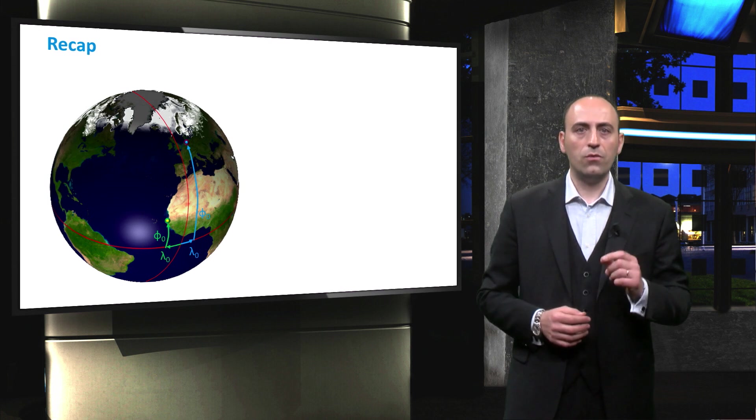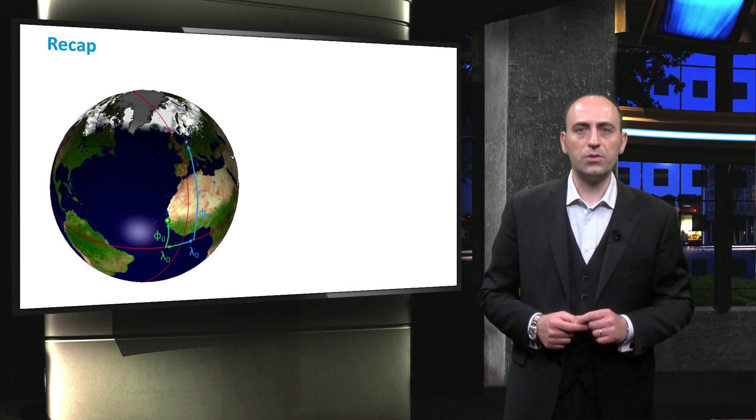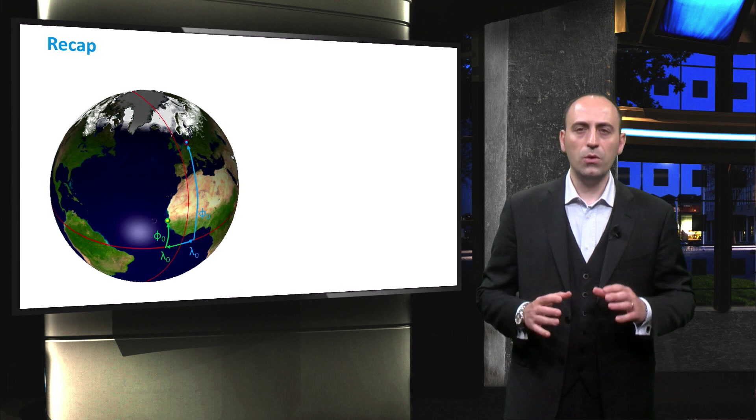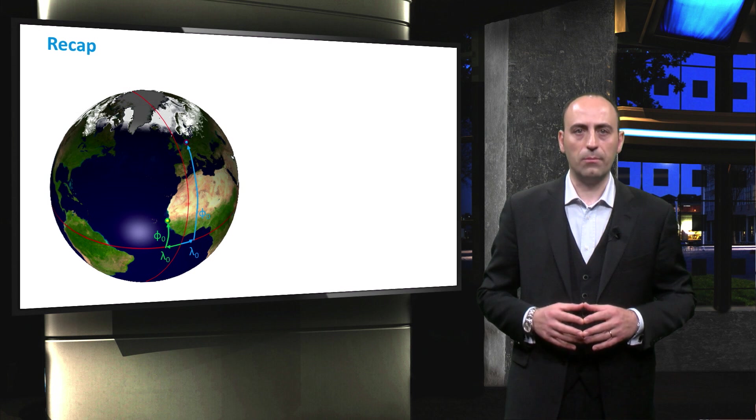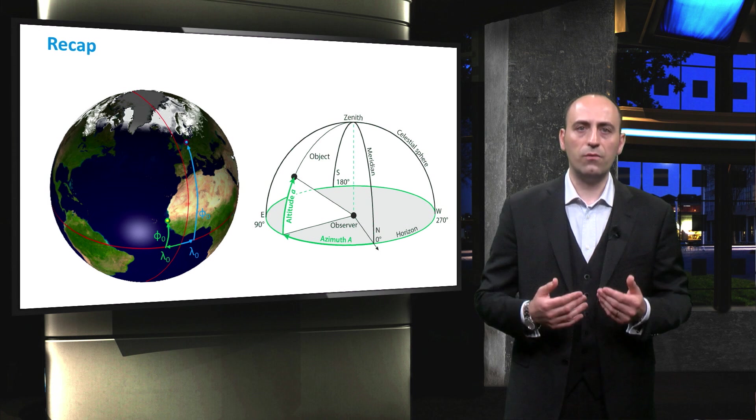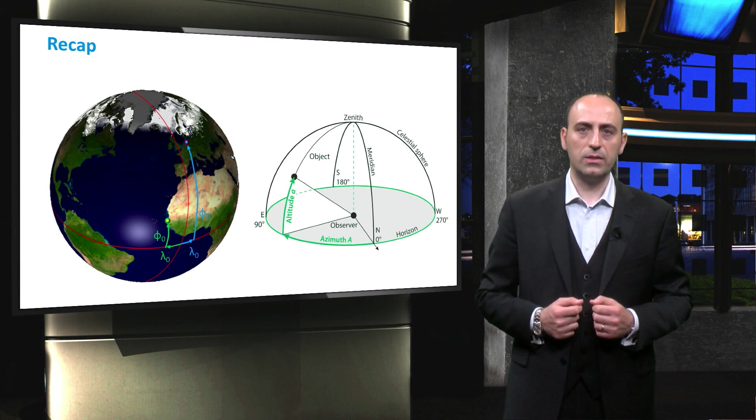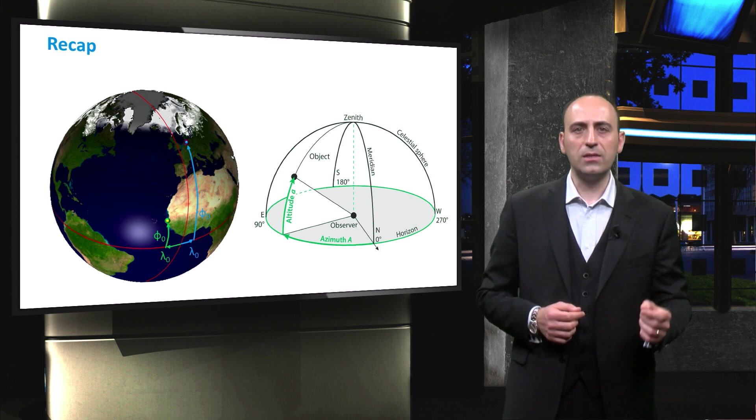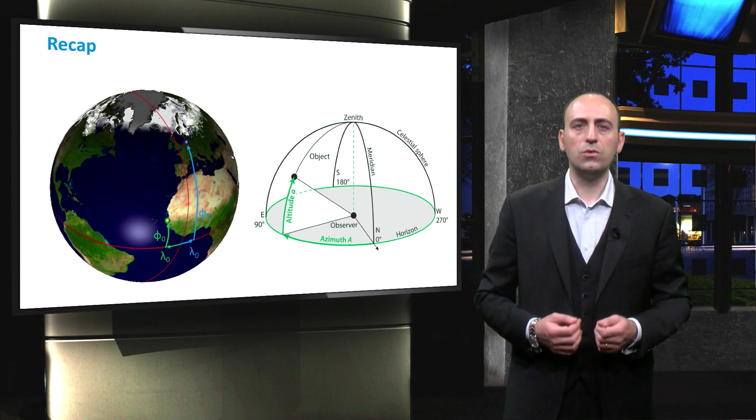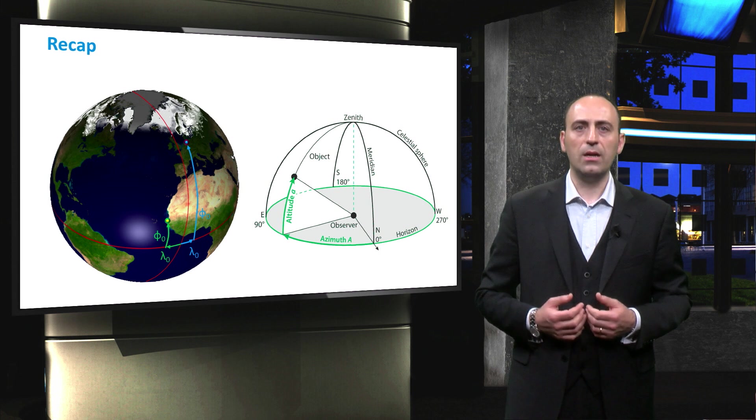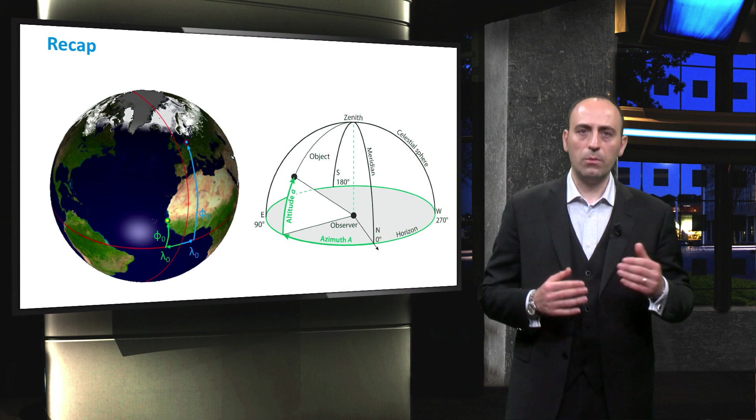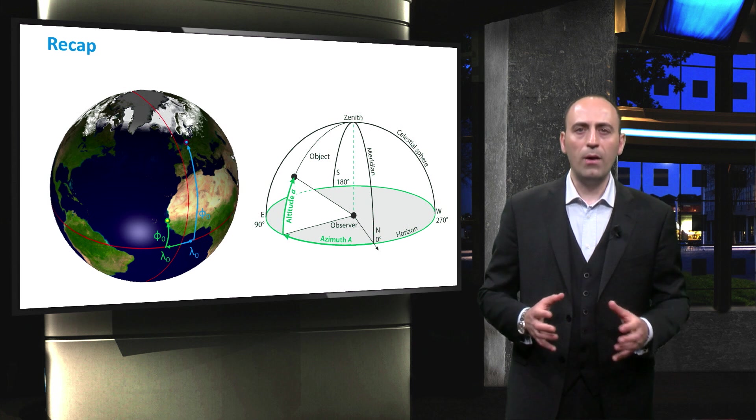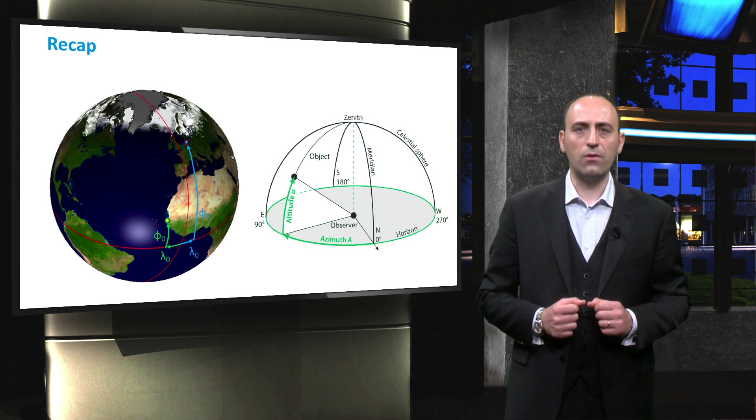So, to summarize, today we learned how to locate an observer on the Earth's crust using the latitude and longitude of the geographical coordinate system. Then, we located the observer in the middle of the celestial coordinate system and defined the azimuth and altitude in order to describe objects in the sky, such as our Sun. Indeed, the next step, as we will see in the following lecture, is to combine these two coordinate systems together to calculate the position of the Sun in the sky.